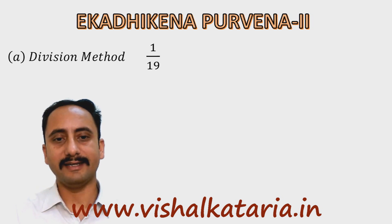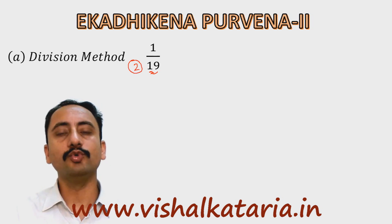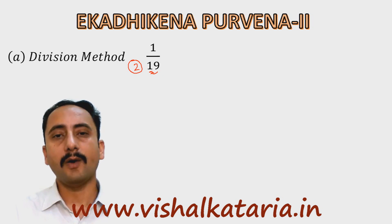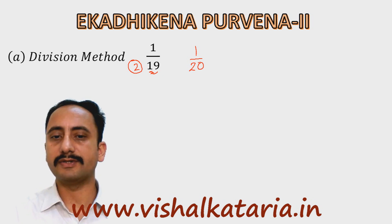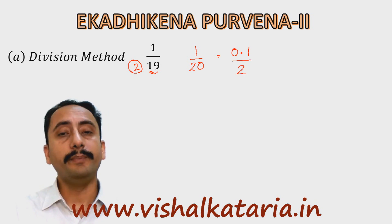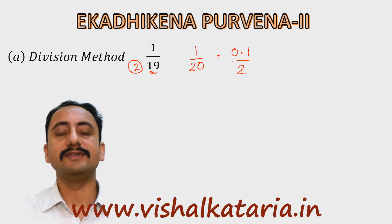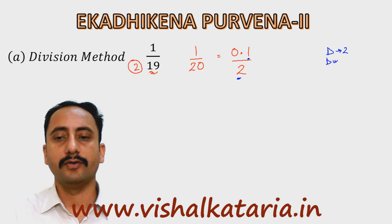Let's start with the division method. Here is the example: 1 upon 19. Ekadhika Purvena means 'one more than the previous number.' Previous to 9 is 1, and one more than 1 is 2, so 2 will be used as the divisor. We write it as 1 upon 20, because one more than 1 is 2, so 1/20 means 0.1 upon 2. I'll be taking 2 as divisor and 1 as dividend.